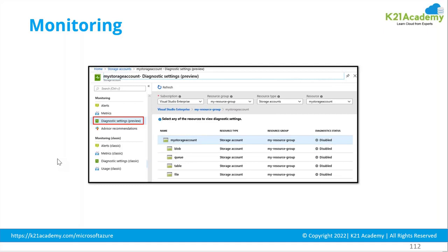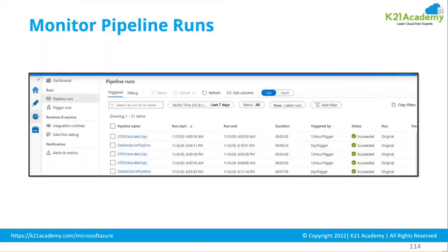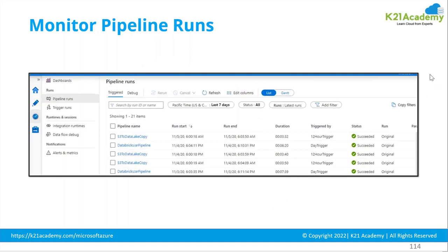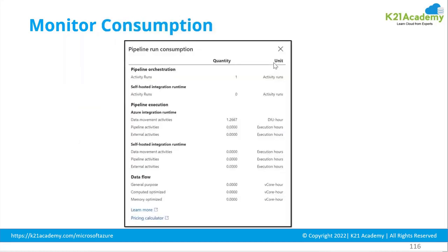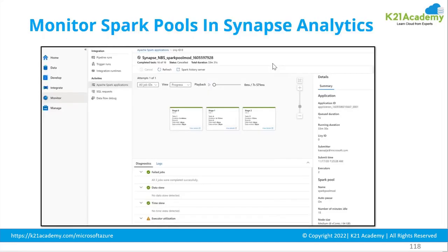Analyze your metrics, analyze your metric namespaces, and produce alerts on them. Monitor your pipeline runs appropriately — keep a watch on how you monitor your pipelines, your activity runs. Event Hub is used for real-time monitoring. Monitor the consumption of your activities and pipelines, set up alerts, and monitor Spark pools in Azure Synapse Analytics as well. We have done a detailed lab on this.